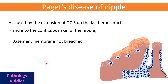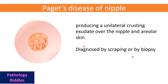In Paget's disease of nipple, DCIS cells grow along the lactiferous ducts but are still limited by the basement membrane, which is intact and never breached. Grossly, it produces crusting over the nipple and areolar skin. Diagnosis is made by scraping of the crusting or by biopsy.